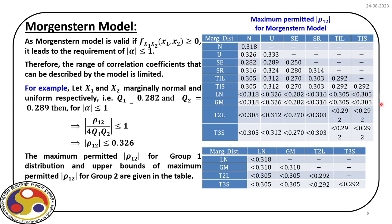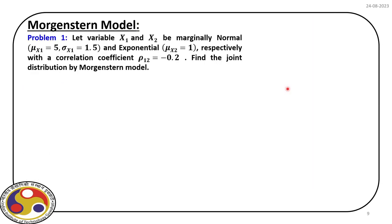With alpha equal to rho_12 divided by 4·q1·q2, and requiring the absolute value of alpha to be less than or equal to 1, we can find the range of rho_12. In this case, the maximum permitted value of rho_12 is 0.326. The upper bounds of maximum permitted correlation for group 2 distributions are given in tables.